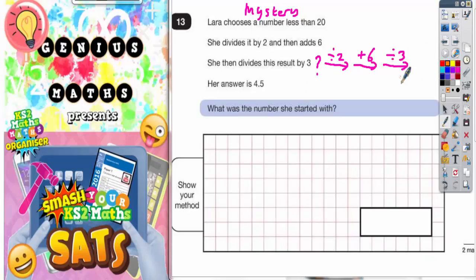All this means is out the end of the number machine pops 4.5. What was the number she started with? Now what we're going to have to do is start with 4.5 and work backwards to get back to the mystery number, which is this question mark here. When we work backwards we do the opposite of what's on the arrows, because that's how you do the opposite - go in the opposite direction.